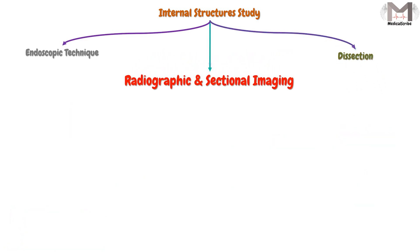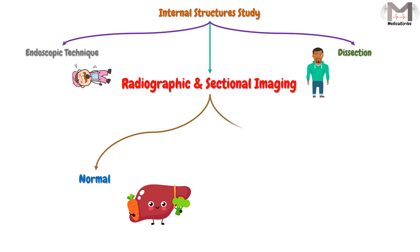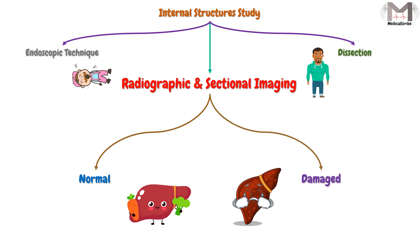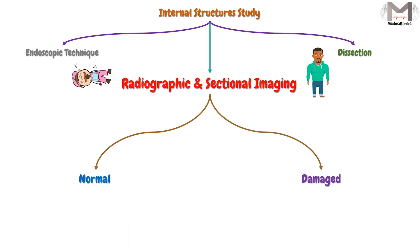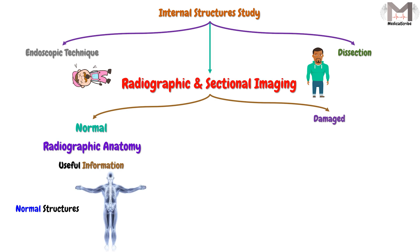While the second method is the radiographic and sectional imaging. We will use it if either the person is alive or dead. It can also be used if the internal structures are normal. If they are normal, we will call this technique radiographic anatomy, which provides useful information about normal structures in a living individual.